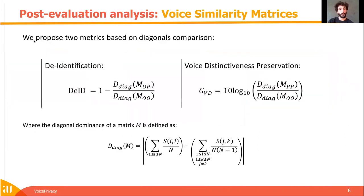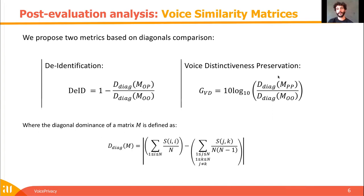We compute how much the diagonal disappears from MOO to MOP, such that an ID equal to 100% is perfect de-identification. And for voice distinctiveness preservation, we compute a gain of diagonal dominance from MOO to MPP, such that a gain equal to zero means that the voice distinctiveness remains globally the same. A gain above zero means there is a gain of voice distinctiveness, and a gain below zero means that we have a loss of voice distinctiveness.